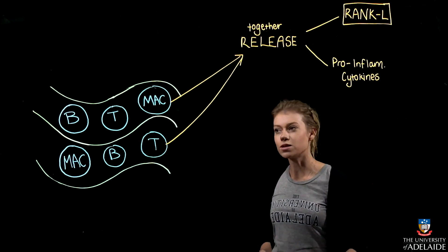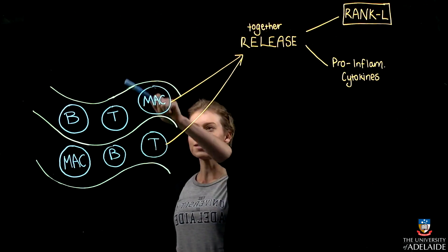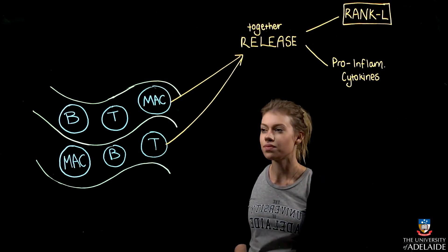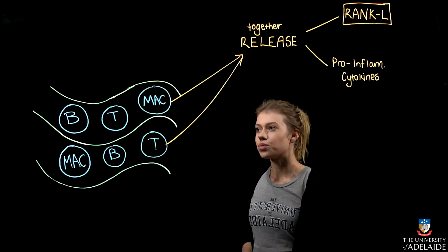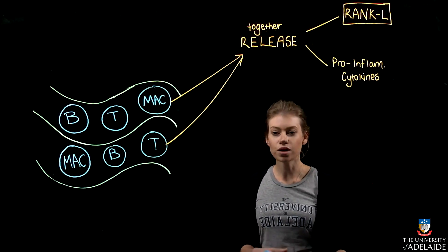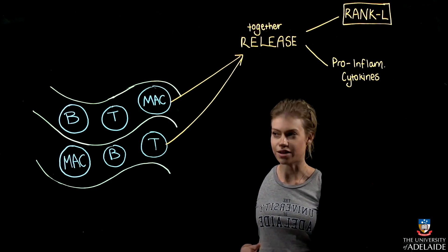While the B cells produce high amounts of antibodies, such as IgE2, which clump bacteria together and work with the complement system to destroy bacteria.